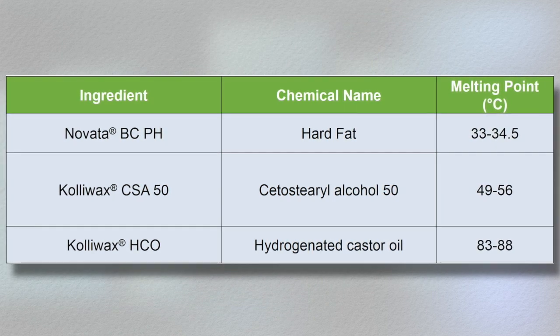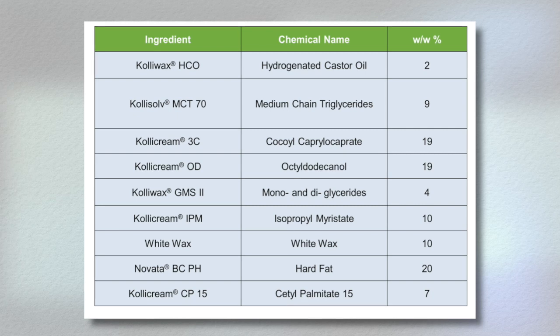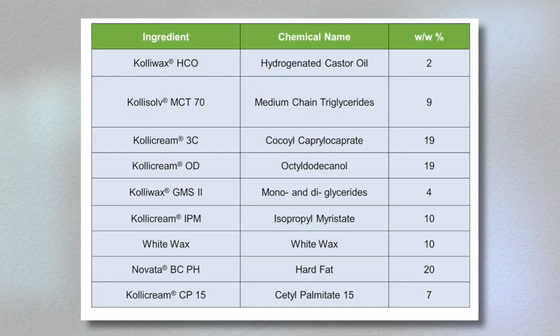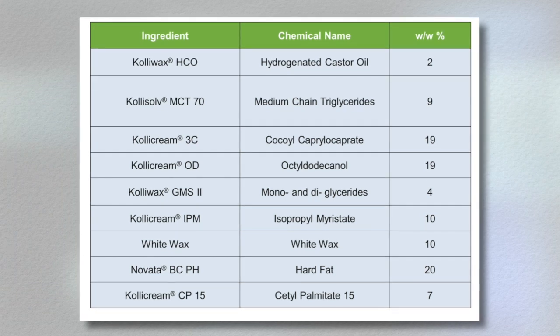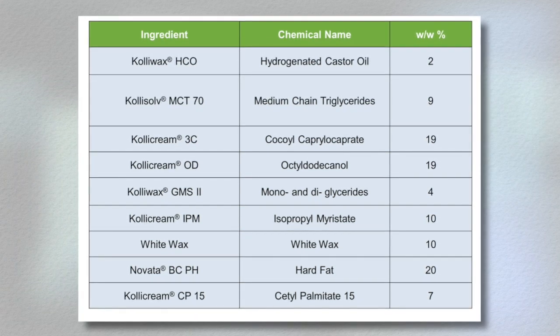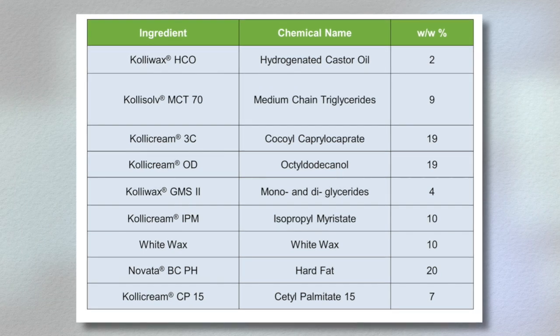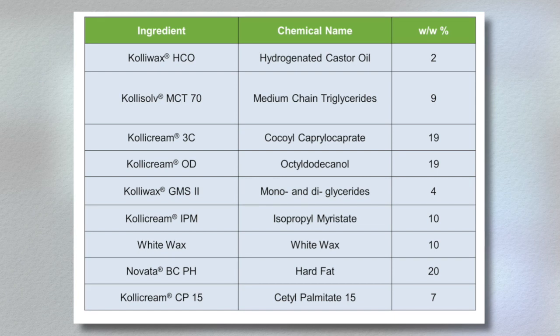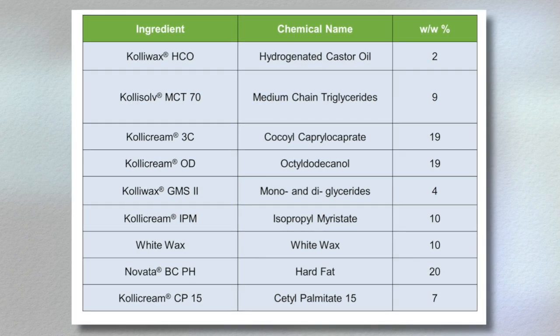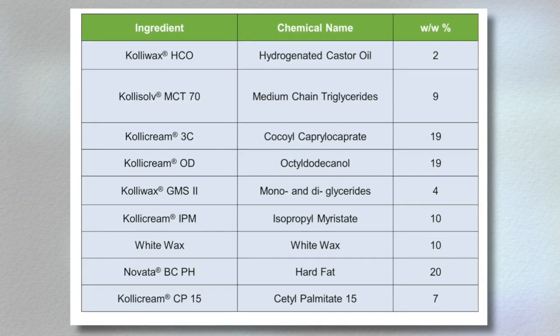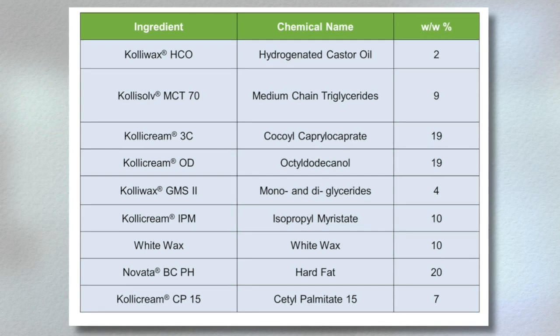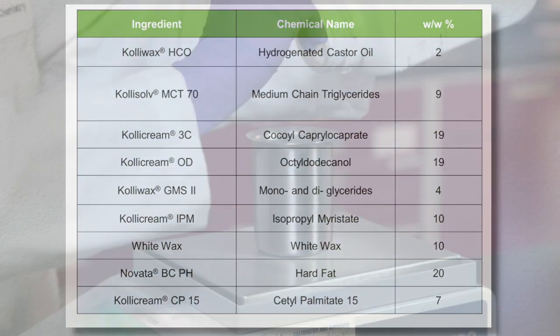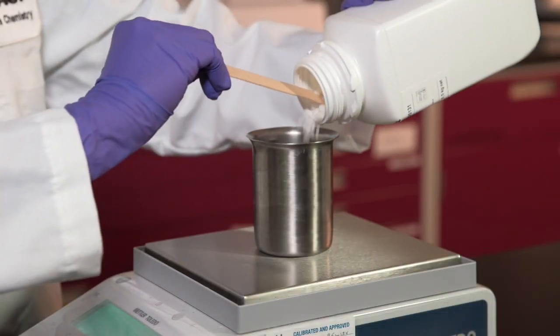Bringing these consistency building components together with other lipidic fluids—like ColiCream IPM, fast spreading oil; ColiCream OD or 3C, medium spreading oils; and ColiSolv MCT70 and ColiCream CP15, slow spreading and solid oils—creates a perceivable profile of consistency and spreadability.